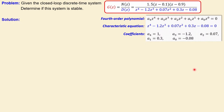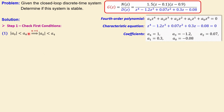Now let's look at the solution steps. The first check is Step 1: verify the initial conditions. The first condition is that the absolute value of the lowest-index coefficient must be smaller than the highest-index coefficient. With a fourth order system, n equals 4, so the absolute value of a0 must be smaller than a4. The absolute value of minus 0.08 is indeed less than 1, so the first condition is met.